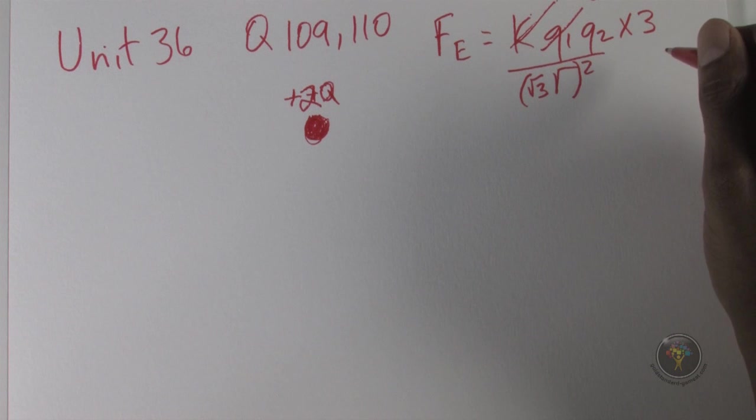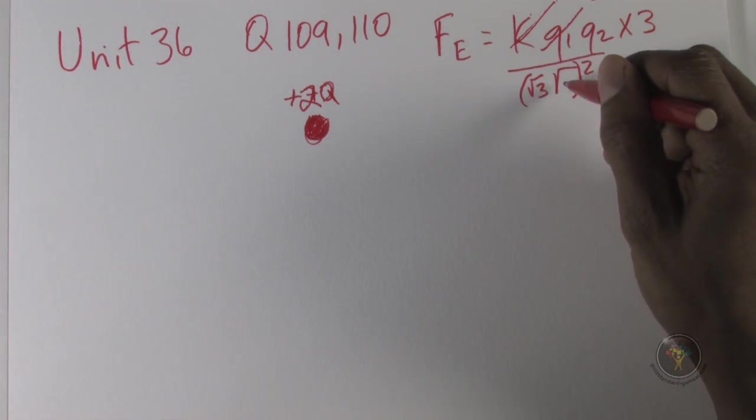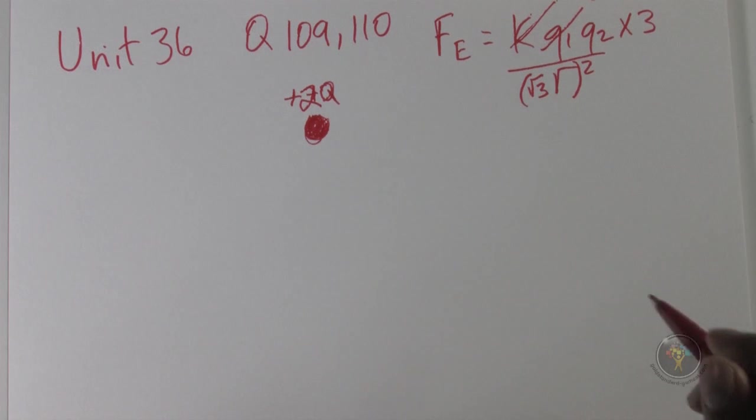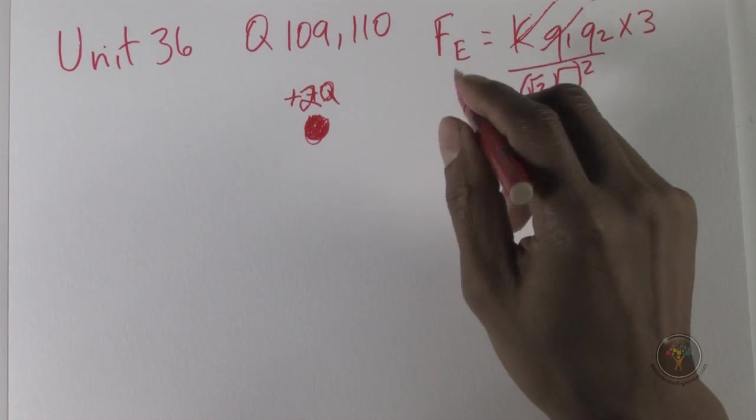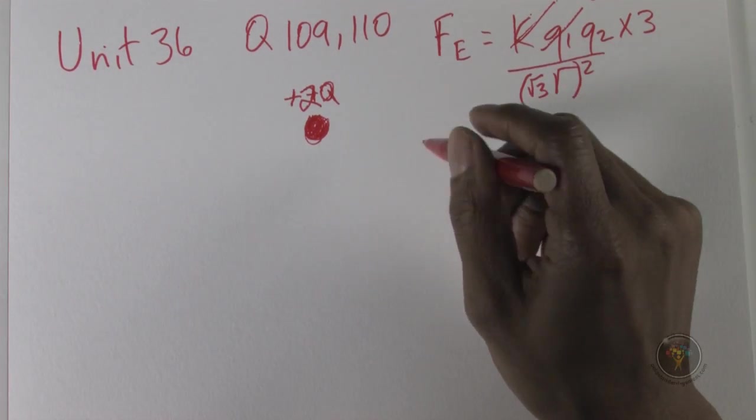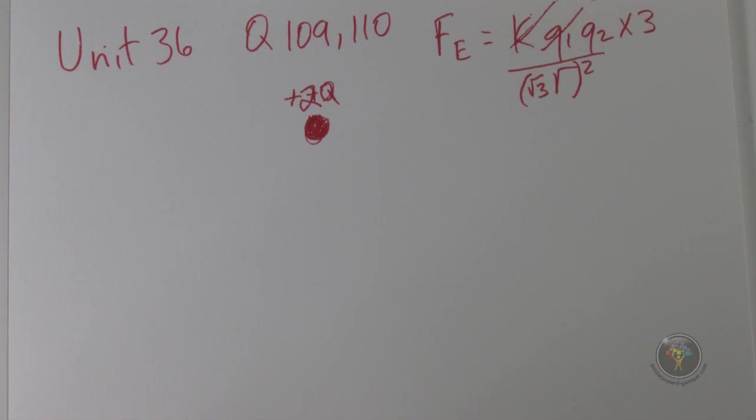So for question 109, the answer is C - we multiply the distance d1 by root 3, and that saves us any time doing simultaneous equations.